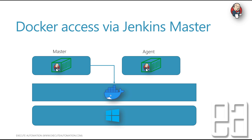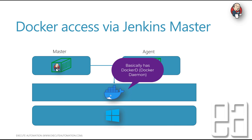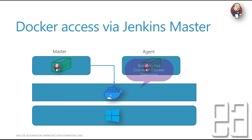Once you try to spin up any agent to be used within your Jenkins pipeline, it is going to communicate with the master, and the master is going to communicate with the Docker running on my local host machine. Then it is going to spin up the container on my local machine and communicate from there. That's the connectivity we made in our earlier video.